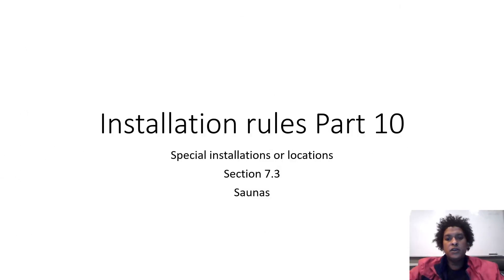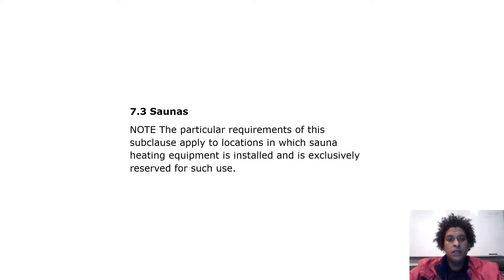Installation Rules Paper 1, Part 10: Special Installations of Locations, Section 6 and 7.3 — Saunas. Note that the particular requirements of this subclause apply to locations in which sauna heating equipment is installed and is exclusively reserved for such use.